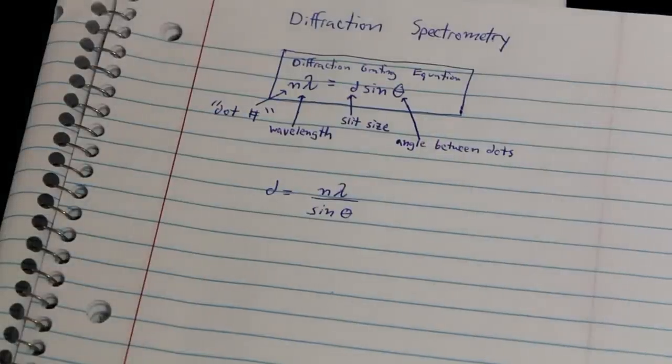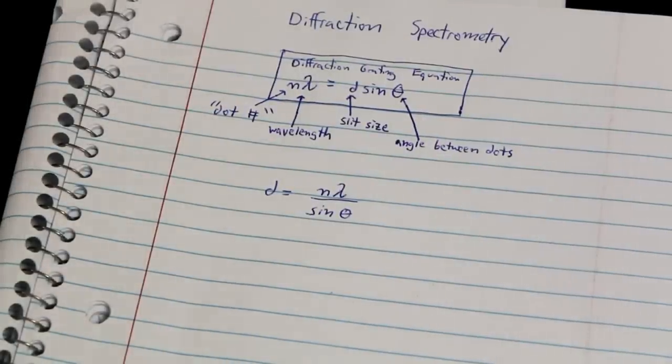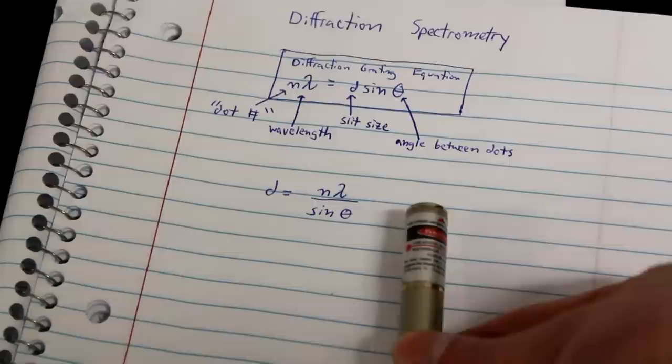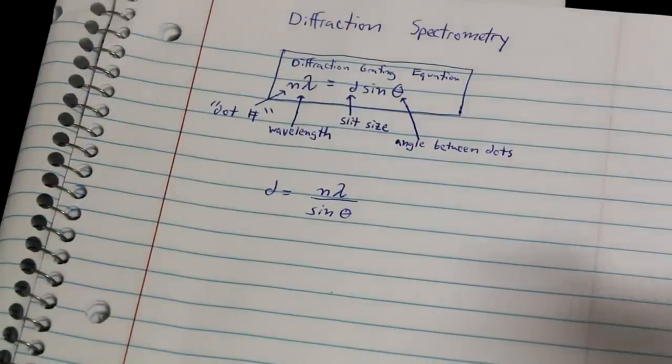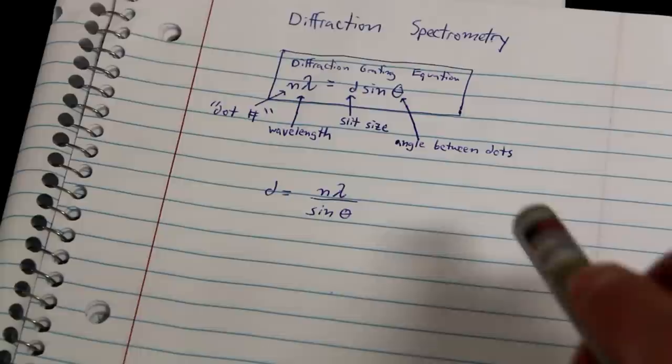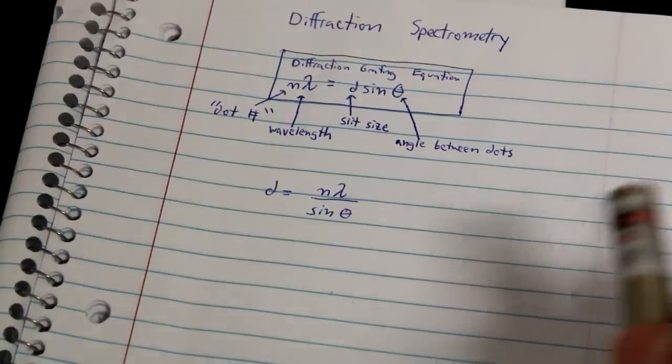So first we have to figure out what the distance between slits, or d, is in our CD. And we're going to be using a typical green laser pointer, because green laser pointers are what we call DPSS, and their wavelength does not change with temperature like your typical red laser pointer.